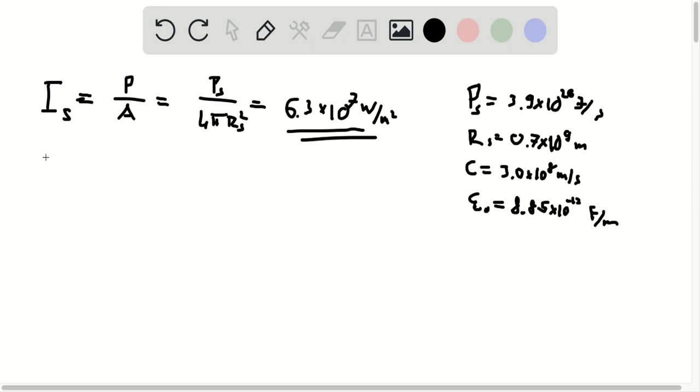Now, the reason why we want to calculate this is because the intensity, the average intensity of the sun, is equivalent to C times U bar, so C times the average energy density of the waves that are being emitted.